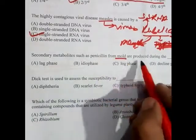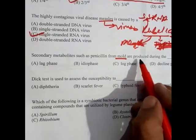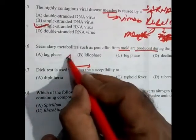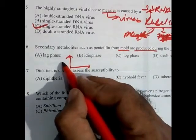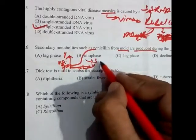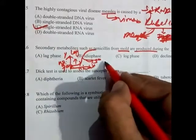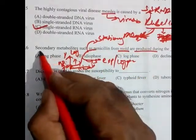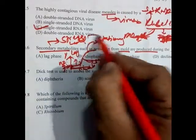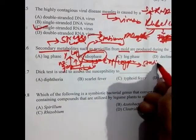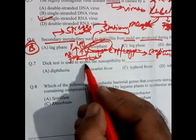Question 6: Secondary metabolites such as penicillin from mold are synthesized during which phase of the life cycle? Looking at the bacterial growth curve — lag phase, exponential or log phase, then stationary phase — secondary metabolites are always produced under stress conditions. That stress condition is mostly present in the stationary phase, also called the idiophase. So the answer is option B.